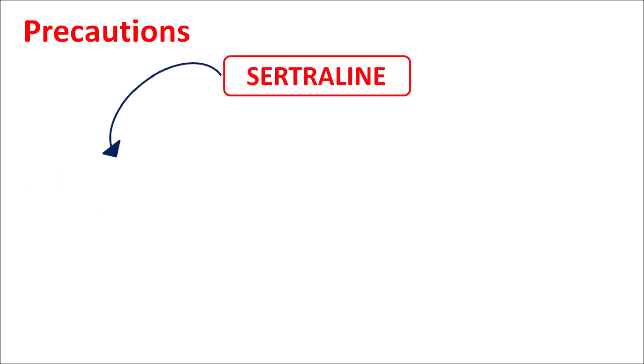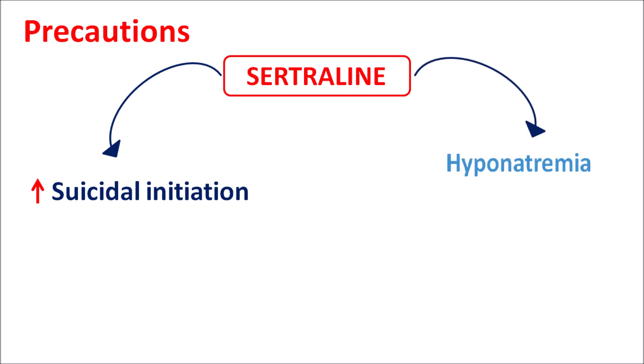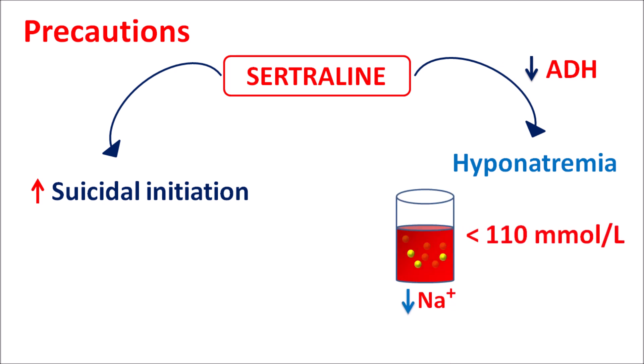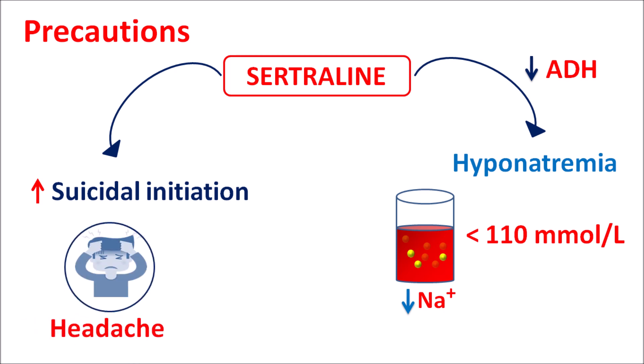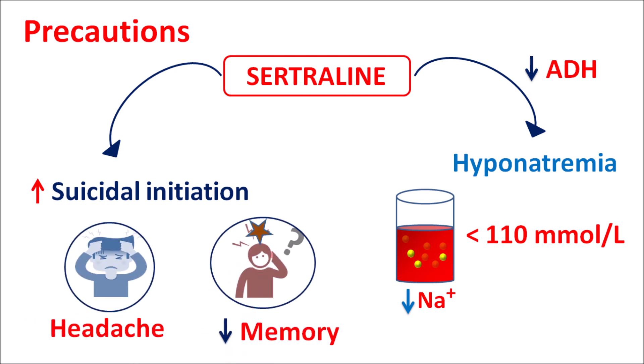Similarly, this drug can increase the risk of suicidal ideation, particularly in children aged 12 to 20 years, where this risk is more pronounced. This drug can also precipitate hyponatremia due to inhibition of antidiuretic hormone action, resulting in decreased sodium levels. The sodium levels may fall below 110 millimoles per liter, which may result in headache, confusion, and loss of memory.